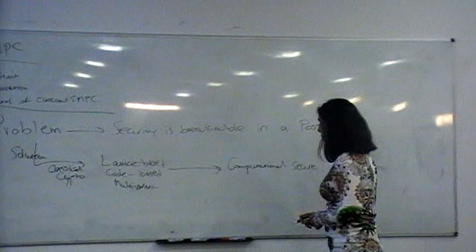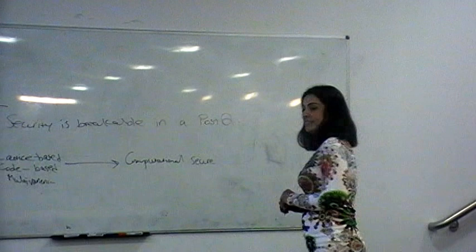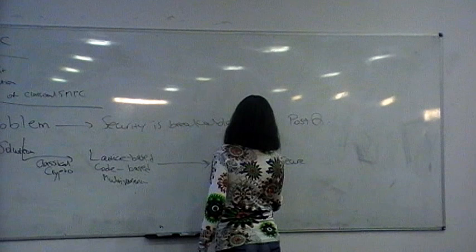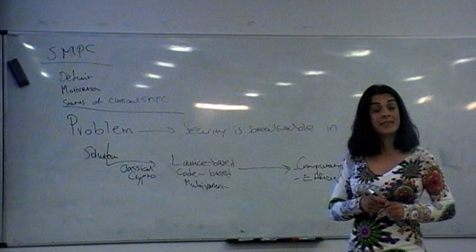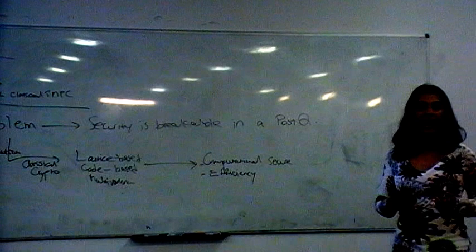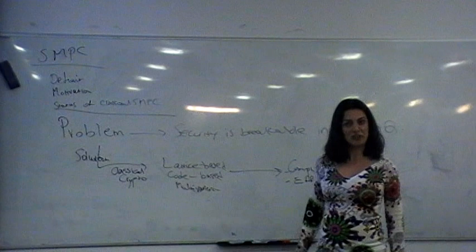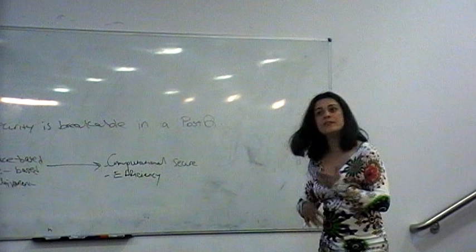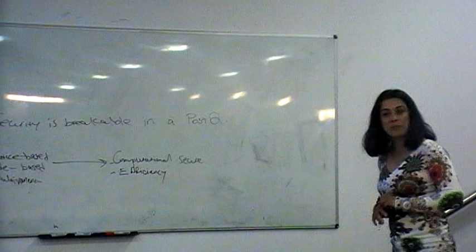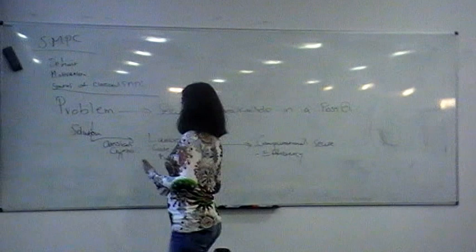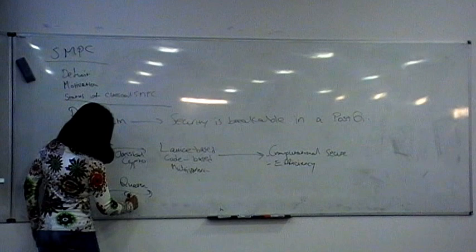These post-quantum alternatives remain only computationally secure. Maybe that's good enough since they're quantum-resistant, but there is also the issue of efficiency. These protocols are supposed to be efficient because they're used in real-world applications like auctions. The moment you replace things with lattice-based schemes, they're not efficient — though that may improve over time. The other solution we're pursuing is quantum cryptography.